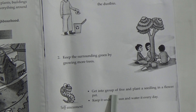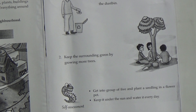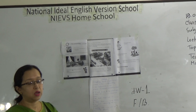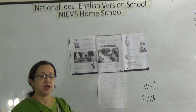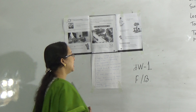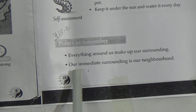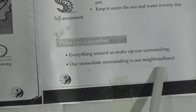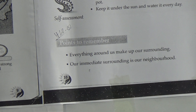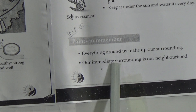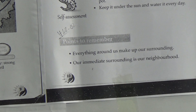Points to remember after reading this chapter: Number one — everything around us makes up our surrounding. Number two — our immediate surrounding is our neighborhood.